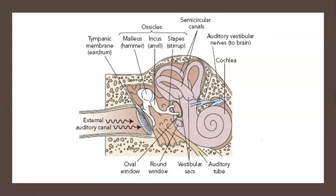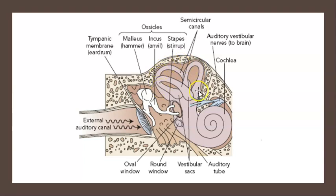Here we've got the auditory-vestibular nerves to the brain — the same nerves that send auditory information also send vestibular information to the brain. And we've got the semicircular canals up here, with all that liquid measuring position and orientation for the vestibular system. If the receptors here are not working right, it's going to send improper information to the brain.